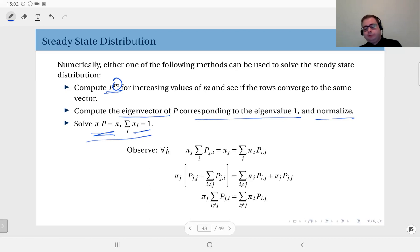One observation is based on this: you can write for any j, πⱼ times the sum of pⱼᵢ's equals πⱼ, because this is equal to one.